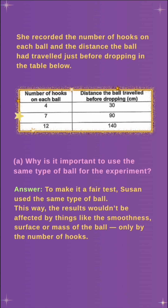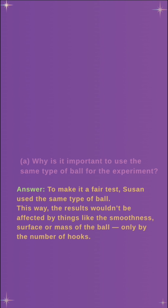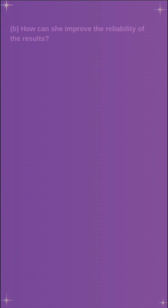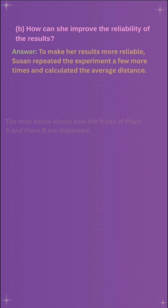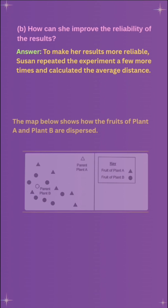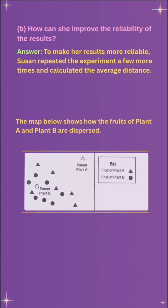Answer: To make it a fair test. Susan used the same type of ball so the results wouldn't be affected by things like the surface smoothness or mass of the ball — only by the number of hooks. Question B: How can she improve the reliability of the results?